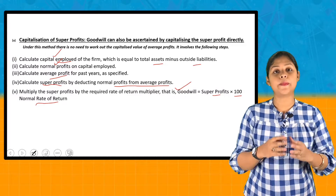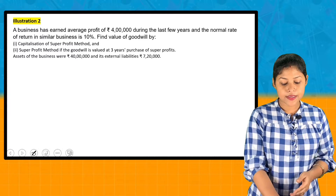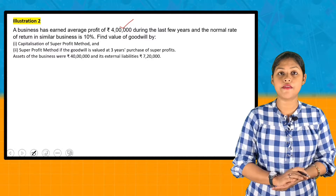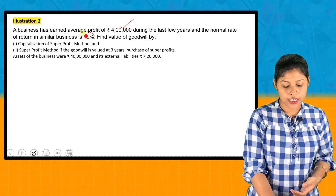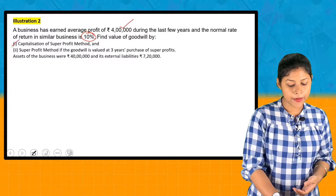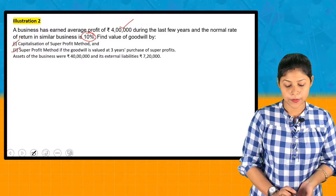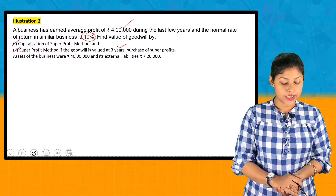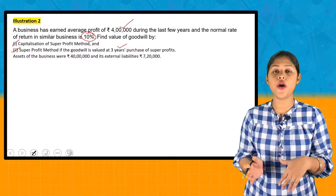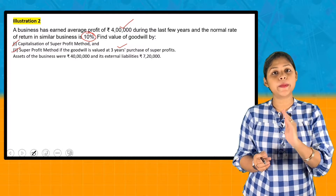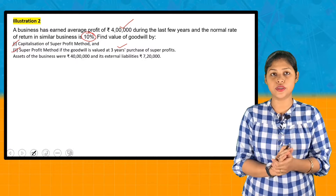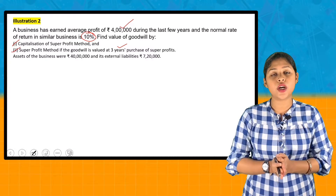Here is a practical problem. A business has earned average profit of Rs. 4 lakh during the last few years. The normal rate of return is 10%. Find the value of goodwill by the Capitalization of Super Profit Method, and also by the Super Profit Method if goodwill is valued at 3 years' purchase of super profit.